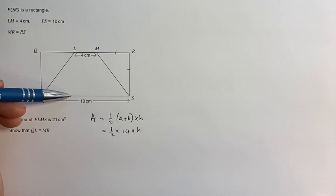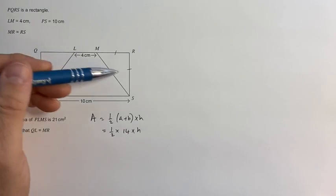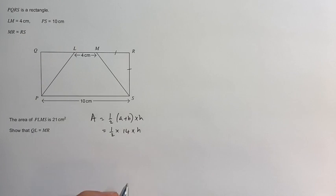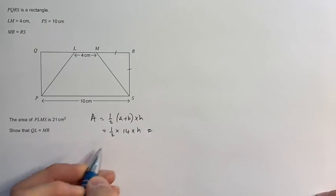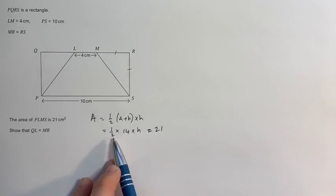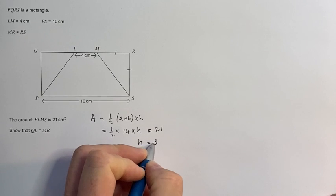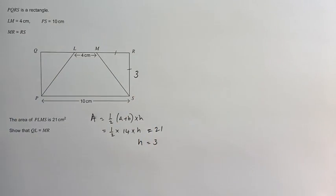And H is the distance between the two parallel sides, in other words, the width of this rectangle. We are told that that area has to be 21. Well, a half of 14 is 7, which means that H had to be 3.